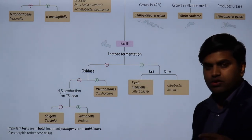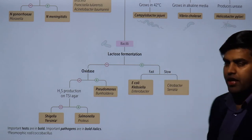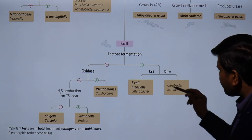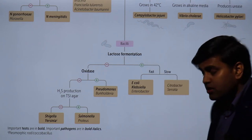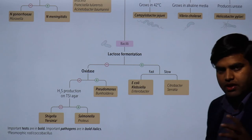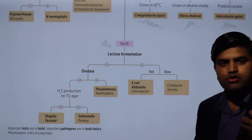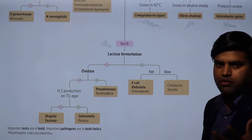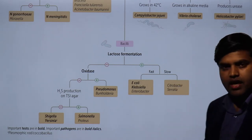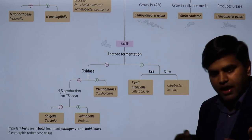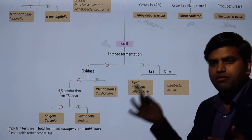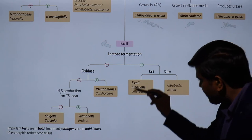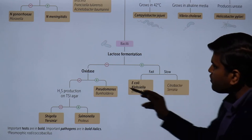On MacConkey agar, organisms that can ferment lactose appear pink. These pink organisms are E. coli, Klebsiella, Enterobacter, Citrobacter, and Serratia. We can further differentiate by fast and slow lactose fermenters. Fast lactose fermenters are E. coli, Klebsiella, and Enterobacter — they produce acid rapidly and appear pink after 14 to 16 hours. Citrobacter and Serratia are slow lactose fermenters — they remain pale at 16-18 hours and become pink at 24 to 48 hours.